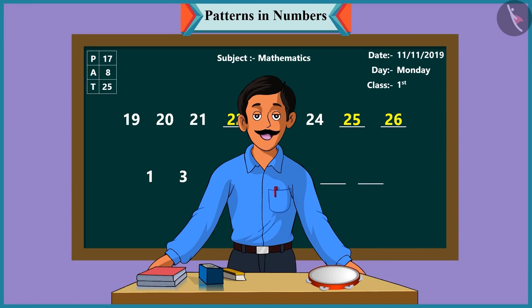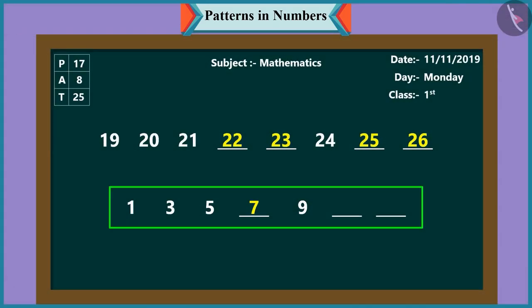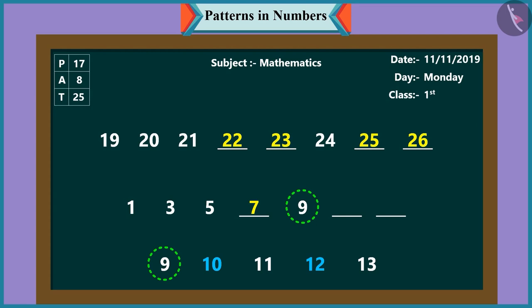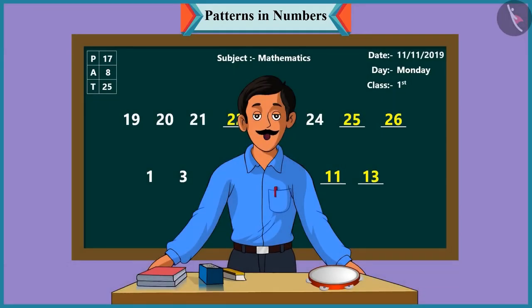Come, Pinky. Now proceed with this pattern. In this pattern, ten does not come after nine. The next number will be eleven and after eleven will come thirteen and not twelve. Wow, Pinky. Well done.